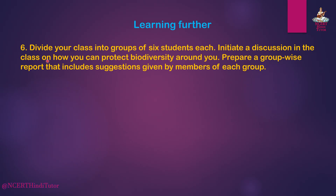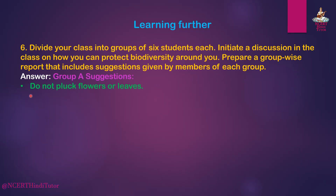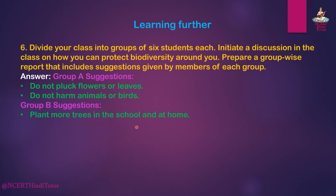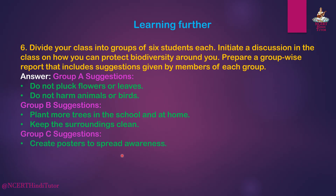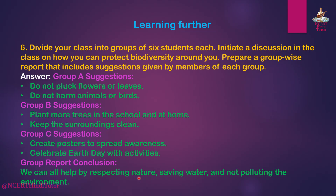Question 6: Divide your class into groups of 6 students each. Initiate a discussion on how you can protect biodiversity around you. Prepare a group-wise report that includes suggestions given by members of each group. Answer: Group A Suggestions — do not pluck flowers or leaves, do not harm animals or birds. Group B Suggestions — plant more trees in the school and at home, keep the surroundings clean. Group C Suggestions — create posters to spread awareness, celebrate Earth Day with activities. Group Report Conclusion — we can all help by respecting nature, saving water, and not polluting the environment.